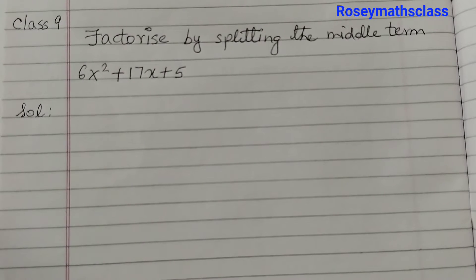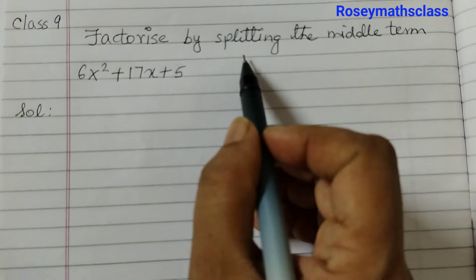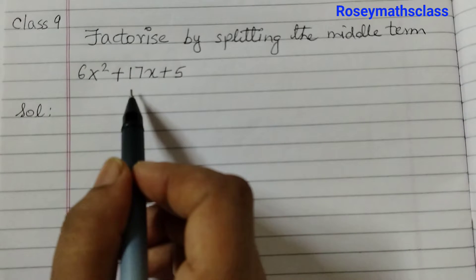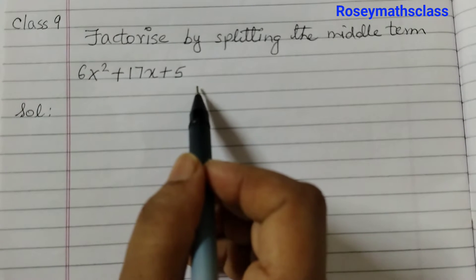Hello students, in this video we will factorize by splitting the middle term. 6x squared plus 17x plus 5.